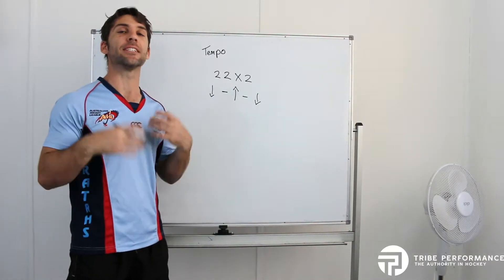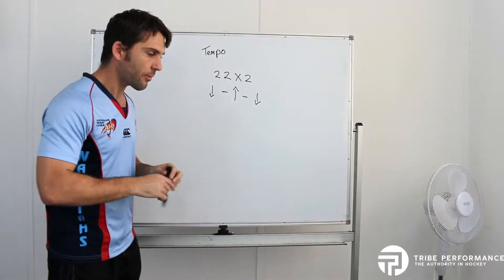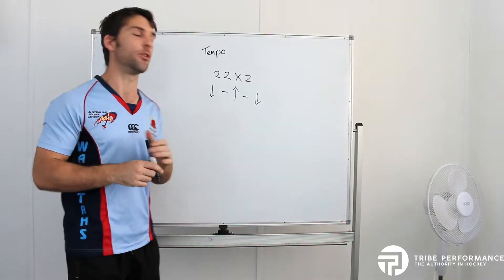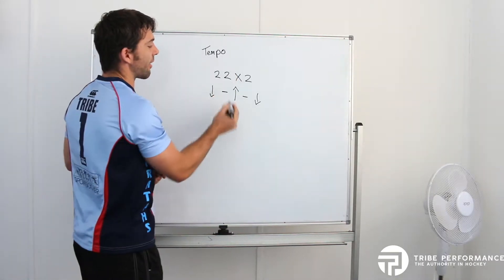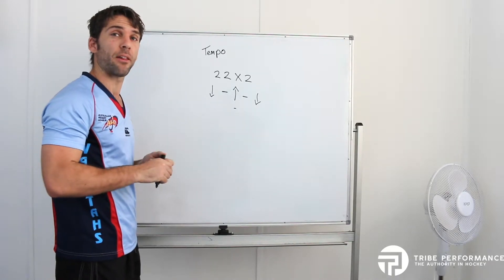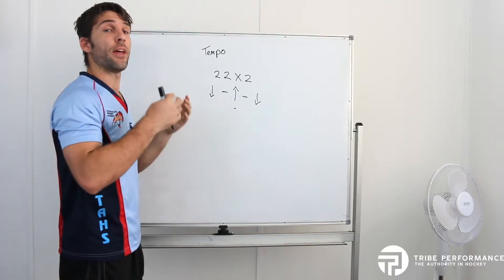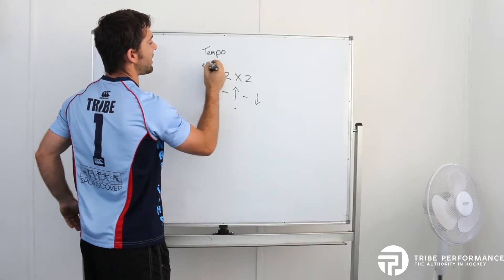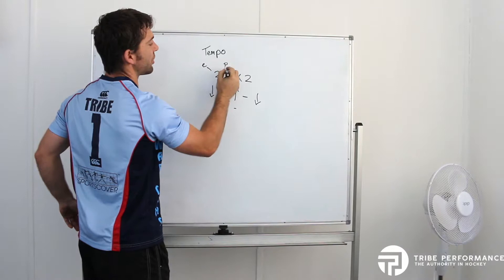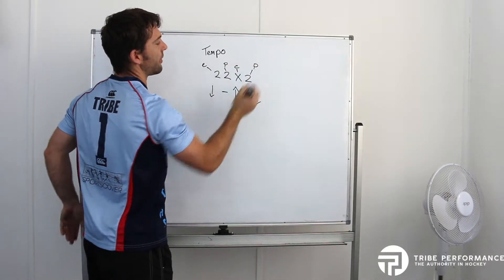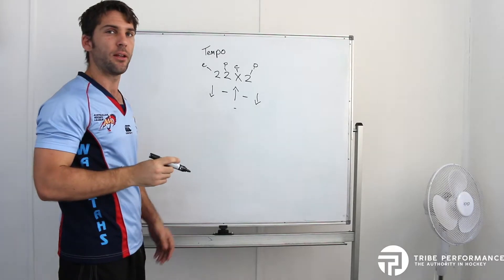Now for our chin up, it is a little bit different depending on what type of movement it is. With our chin up, we actually start at the third number because we do the concentric part of the movement first. That's why we start here, because this is our eccentric part of the movement, this is our pause, this is our concentric part of our movement, this is our next pause.